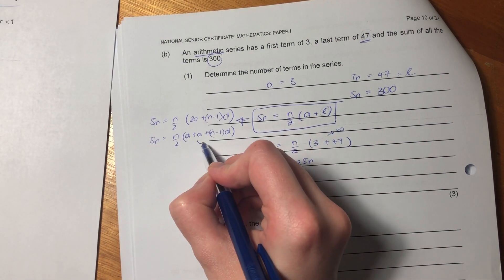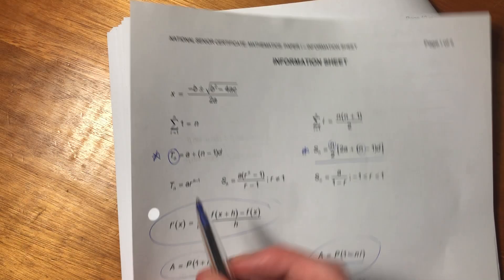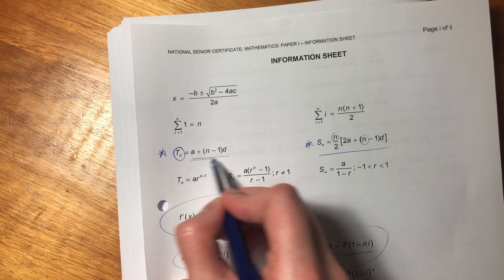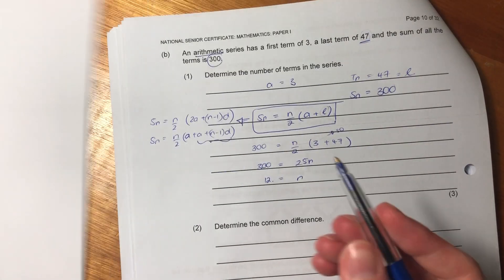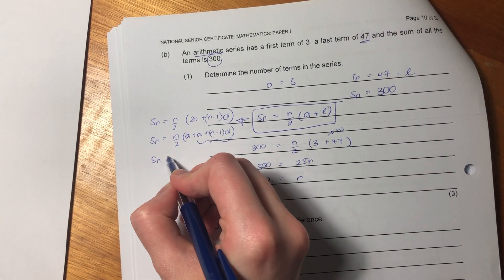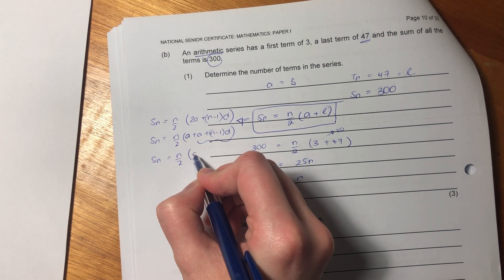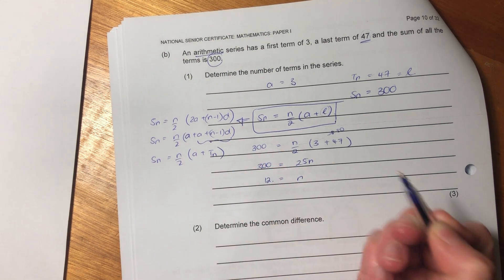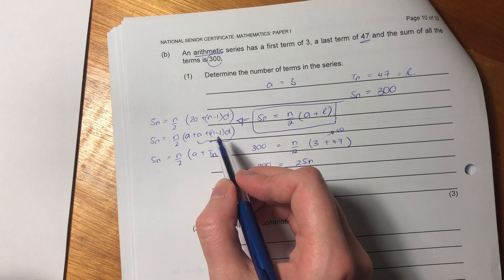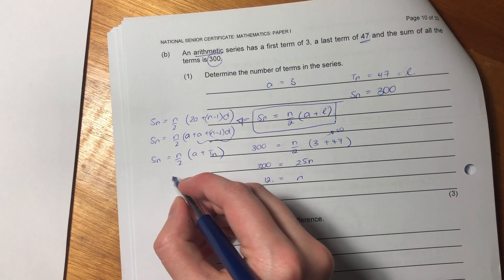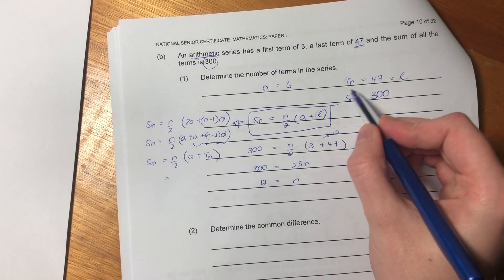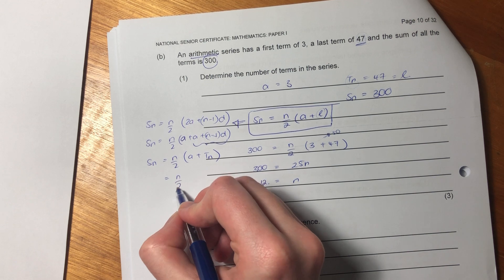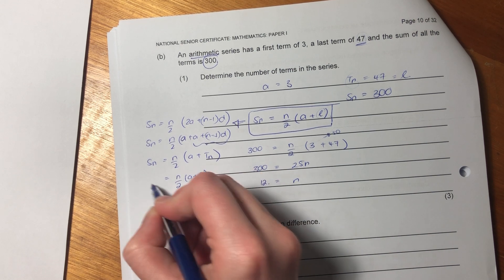But this can be written like this. It can be written as A plus A plus N minus 1 D. But if you look at that, that's actually exactly the same as TN. So we can write this as SN equals N over 2, A plus TN. Because that's exactly the same as that. I've just substituted it, made it a bit simpler. We define this as TN and therefore you get that formula.